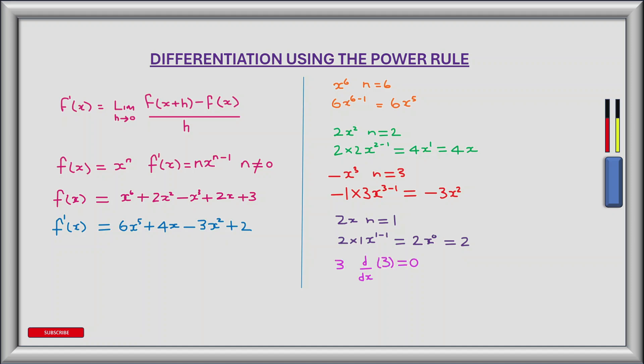Now let's take a look at our final term, which is 3. Now 3 is a constant, so it's not multiplied by x. When we apply the power rule to a constant, the derivative is always 0. So the derivative of 3, the constant with respect to x, is 0. That completes the derivative of our function f of x. So the complete derivative, f prime of x, is equal to 6x to the power of 5 plus 4x minus 3x squared plus 2.